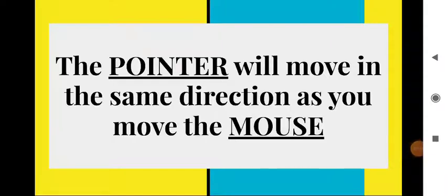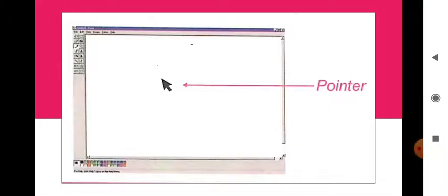When you work with a mouse, you can see an arrow sign on your computer screen, and that arrow is known as the mouse pointer. The pointer will move in the same direction as you move the mouse. You can see on the computer screen there is an arrow, and when we move the mouse, this pointer will also move on the computer screen.